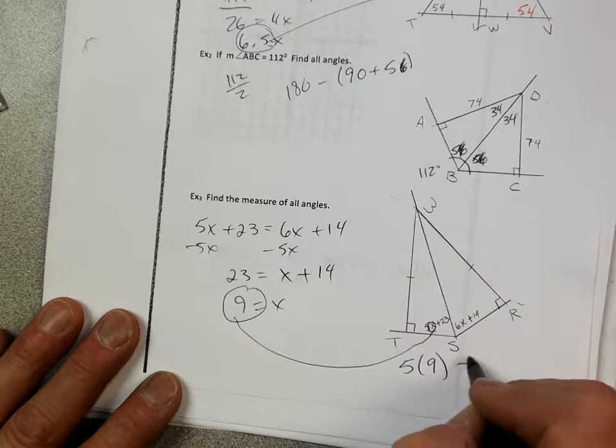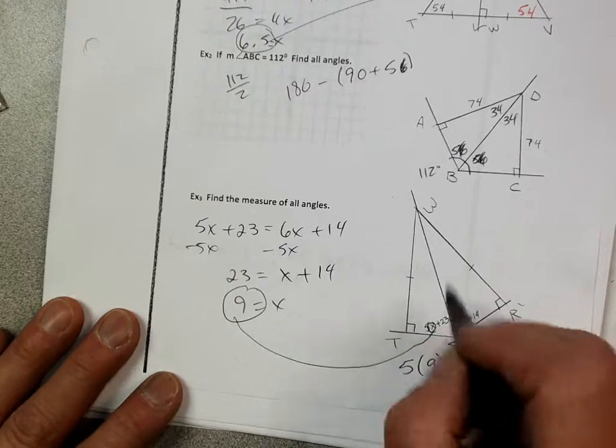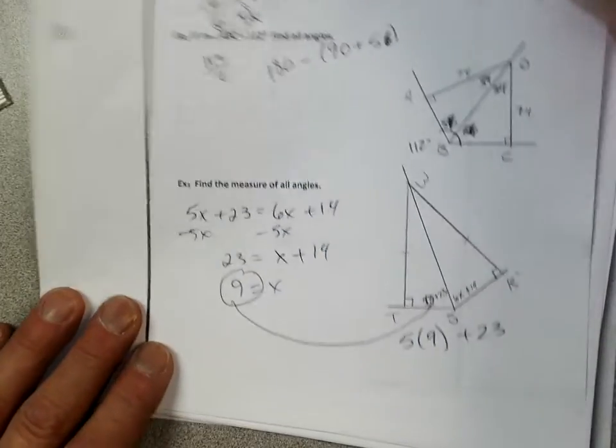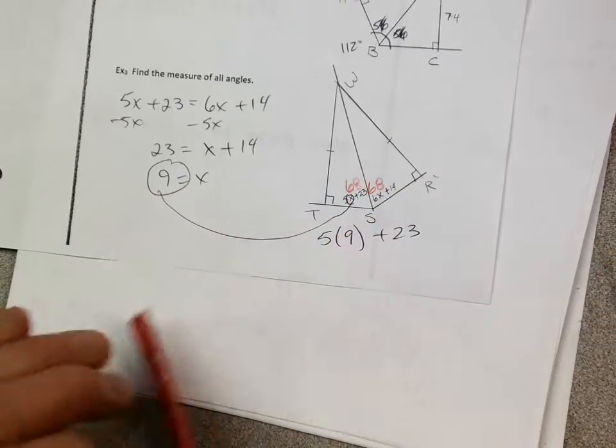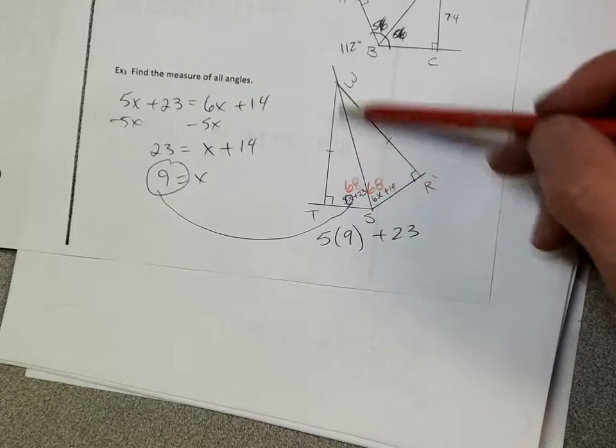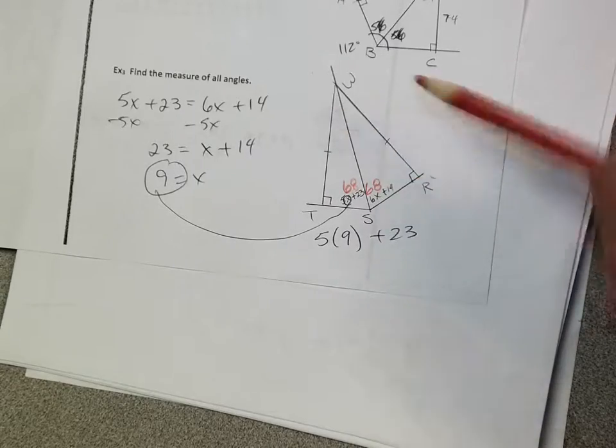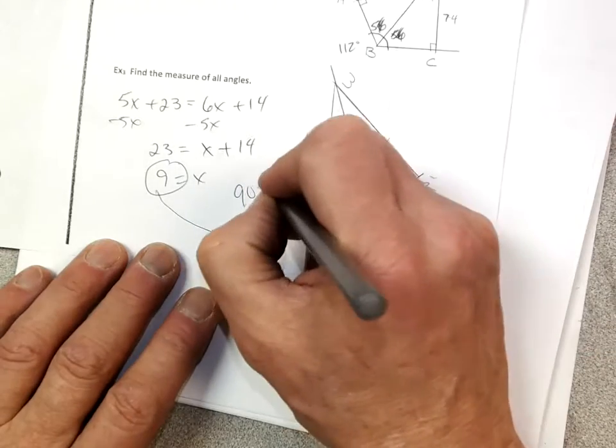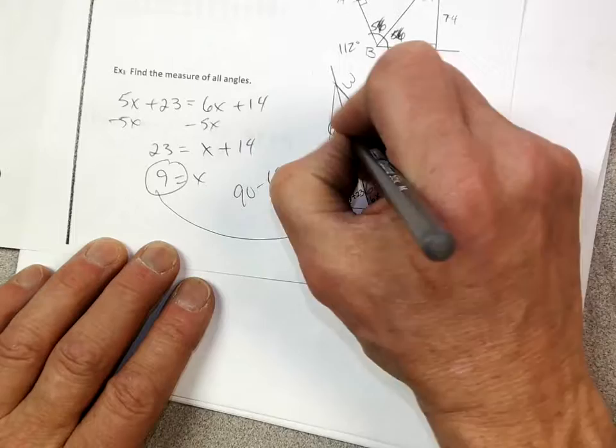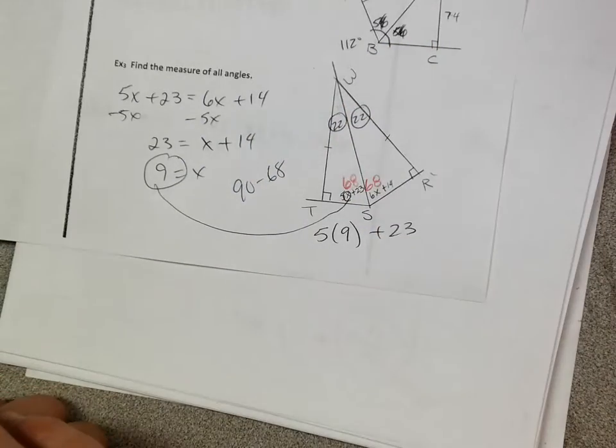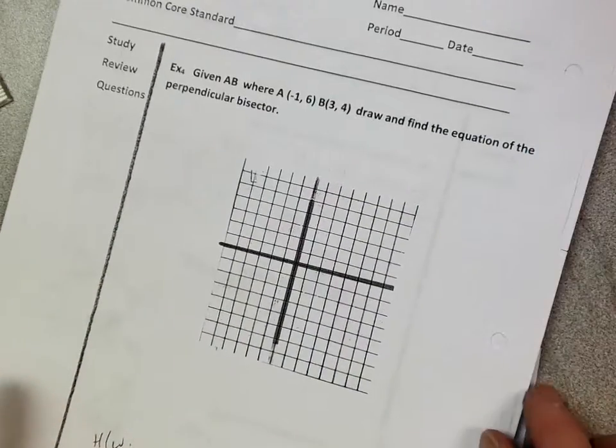Okay, 9 goes into there. 5 times 9 plus 23. 45 plus 23. I get 68. So this angle, then, is 68. This angle's 68. Okay. You know, the easiest way to find these angles, subtract from 90. That's the easiest. These two have to add up to 90. Do you agree? I mean, if 90 of it's used here, then these two have to add up to 90. So I'm just going to go 90 minus 68. 90 minus 68 is a 22. And 22. Pretty easy. Okay. Turn the page.